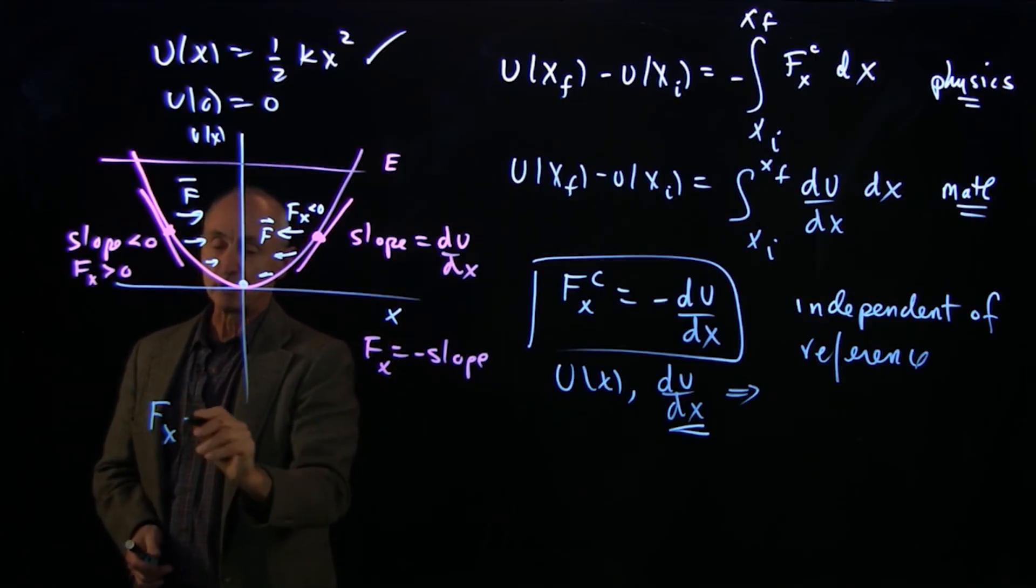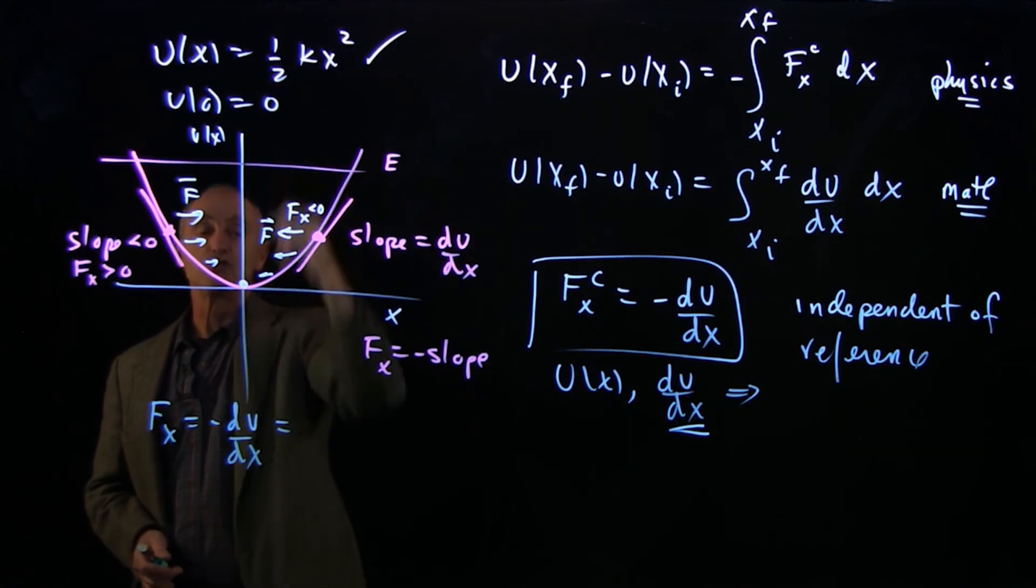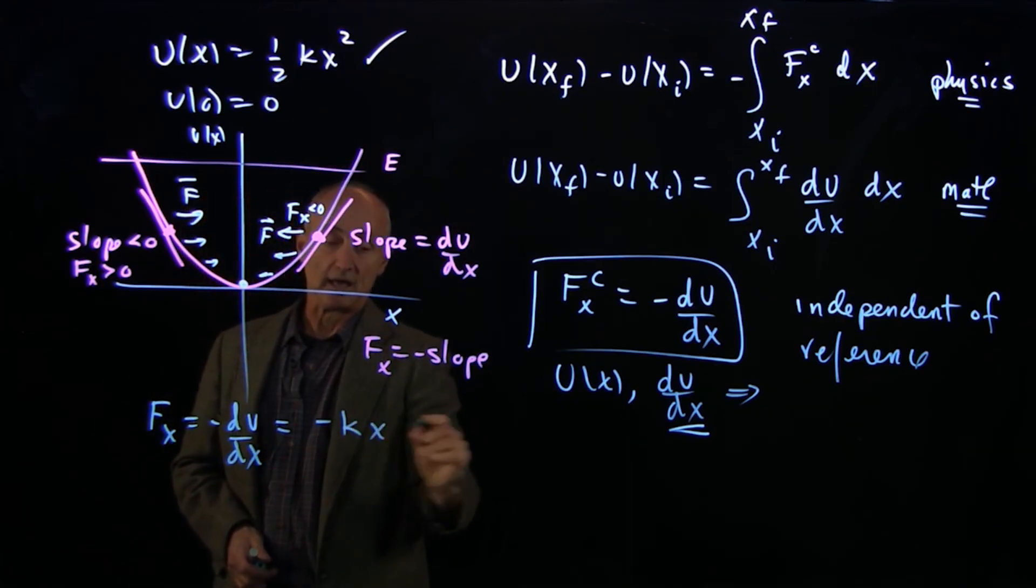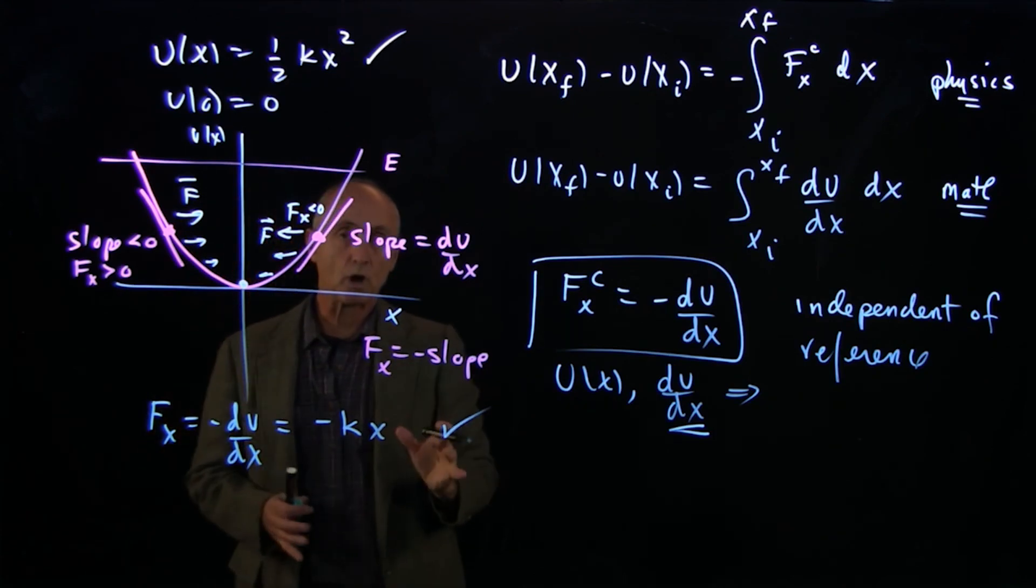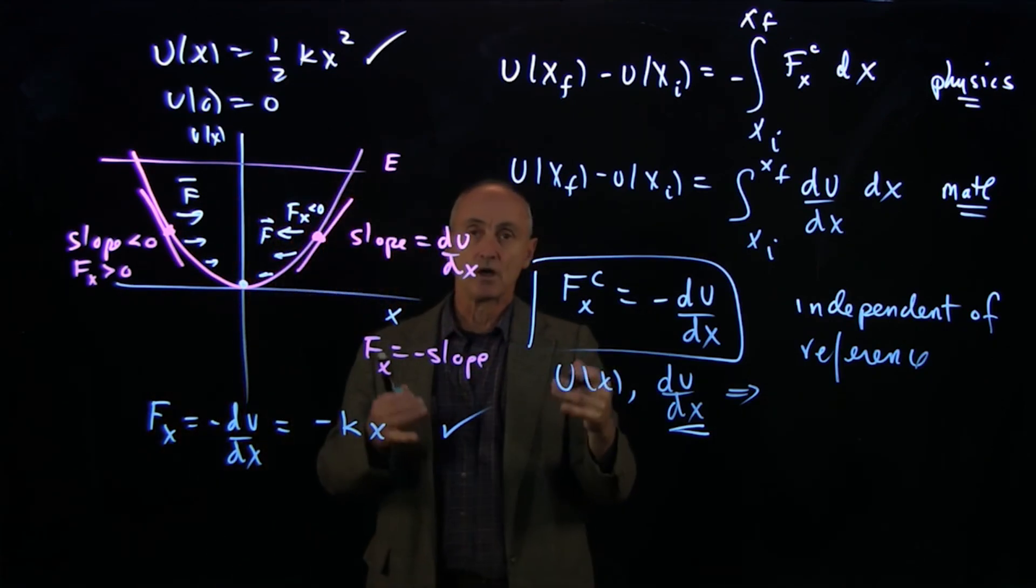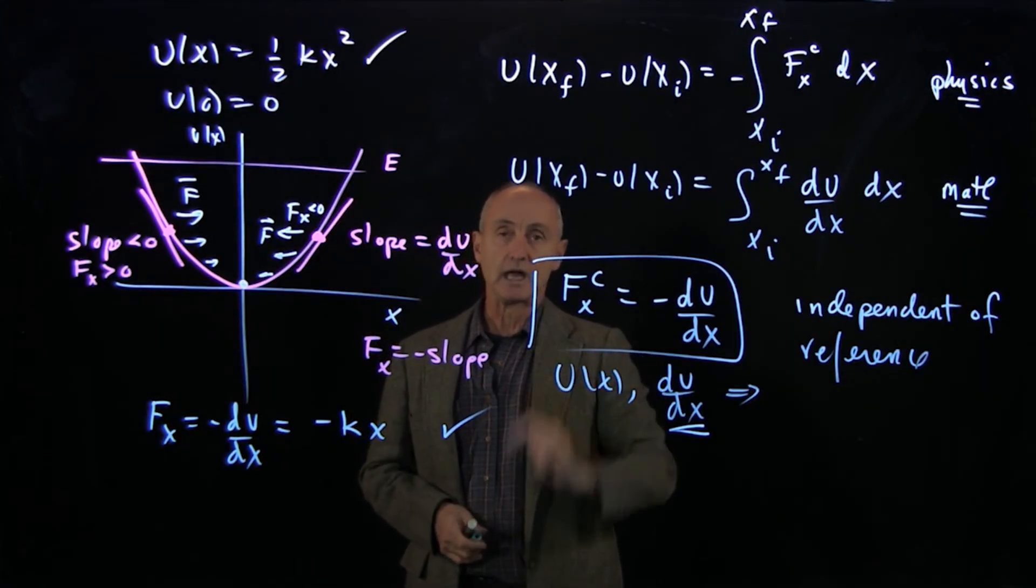And let's just check for this simple case. This is minus dU/dx. When you differentiate that, you get minus kx. And we know that's the spring force. So this is why we're subtly shifting our focus to our state, our function U of x, and its first derivative.